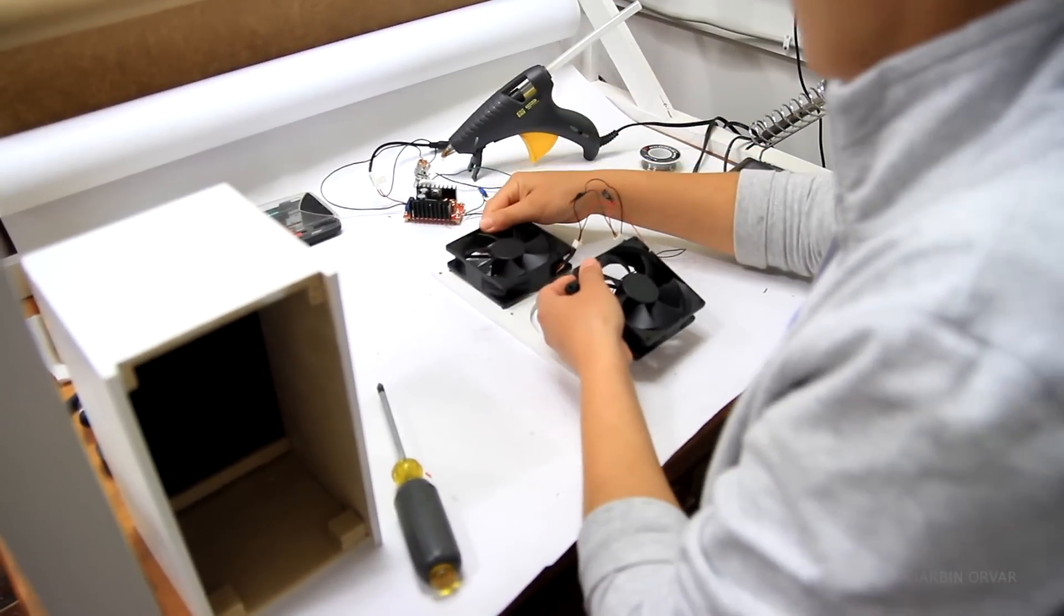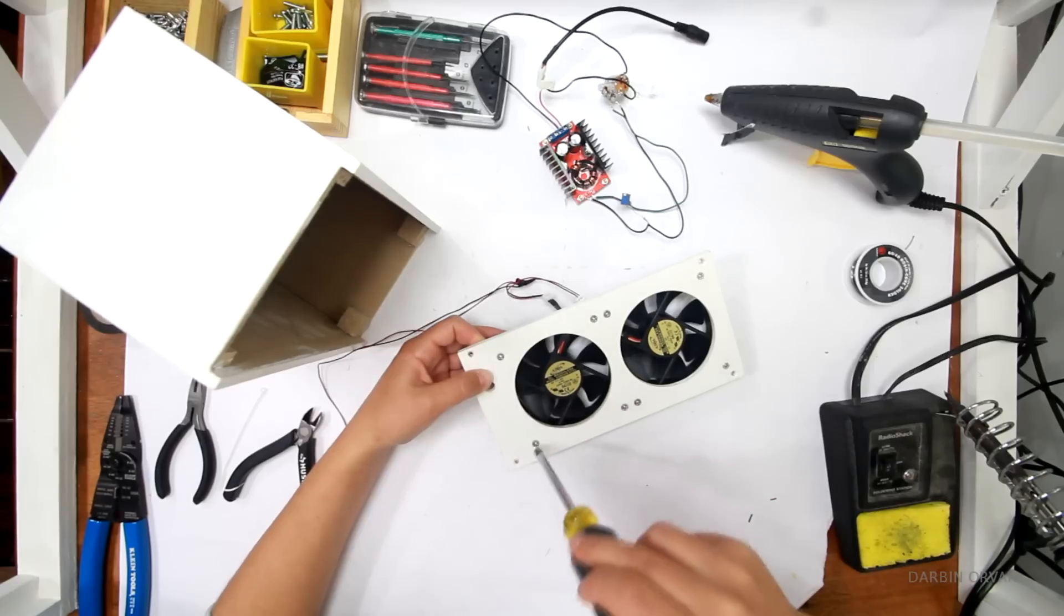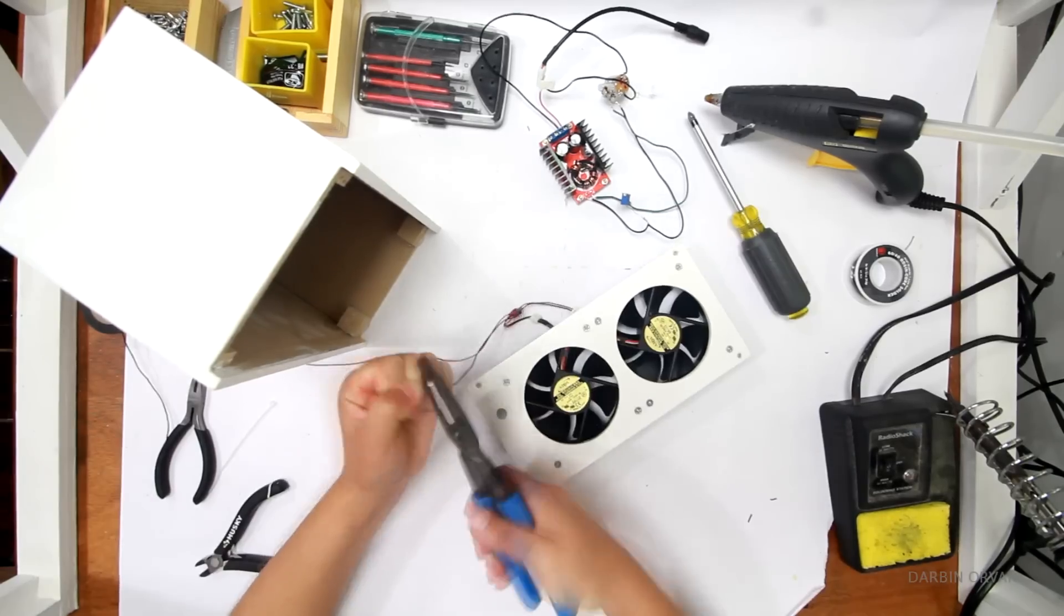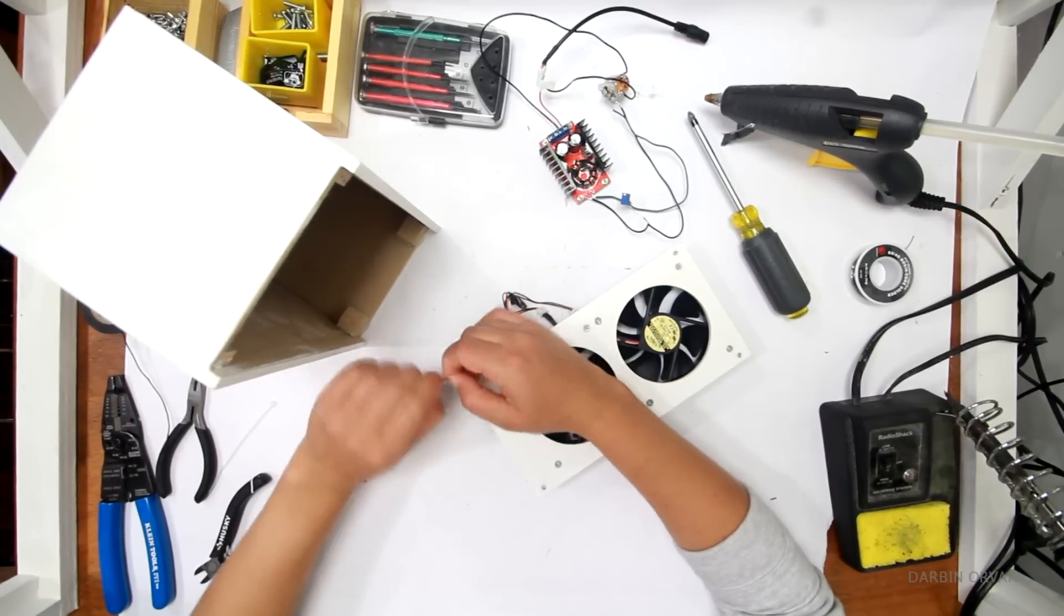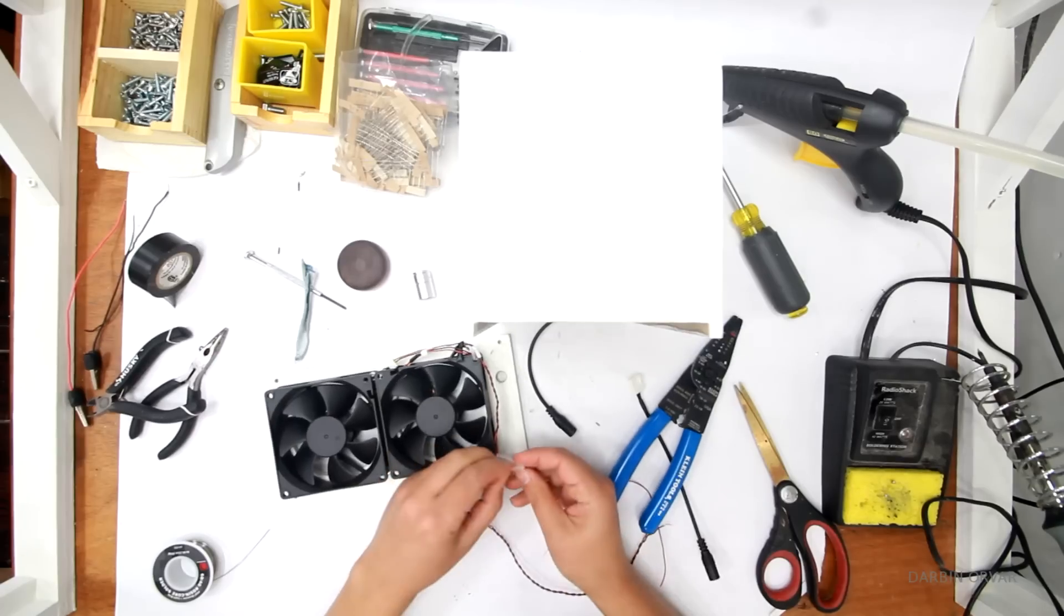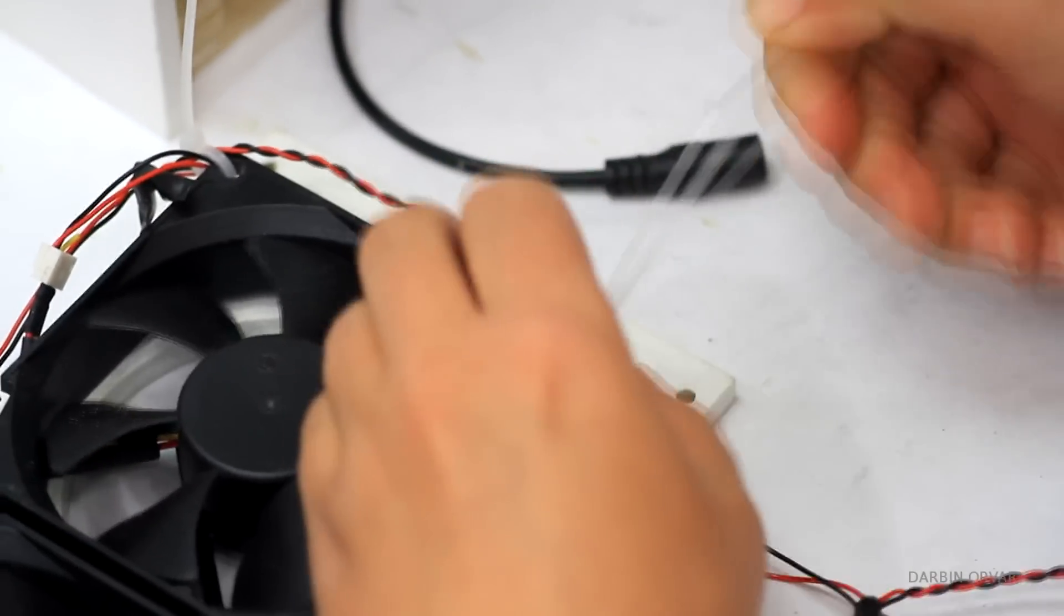Next I'm screwing the fans into the back piece and the holes fit perfectly. To clean up some of the wires, I'm twisting them around each other so they stay in place, and then securing to the fan with a plastic zip tie, just because I don't want the wires to be all over the place.